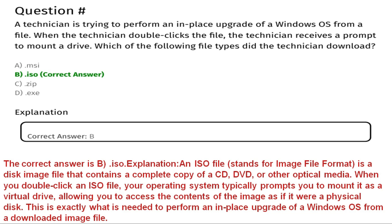Next question: A technician is trying to perform an in-place upgrade of a Windows operating system from a file. When the technician double-clicks the file, they receive a prompt to mount a drive. Which of the following file types did the technician download? Option A is .msi, Option B is .iso, Option C is .img, Option D is .exe. The correct answer is Option B, .iso. An ISO file is a disk image file containing a complete copy of a CD, DVD, or other optical media. When double-clicked, the OS prompts you to mount it as a virtual drive, which is exactly what is needed for an in-place Windows upgrade.